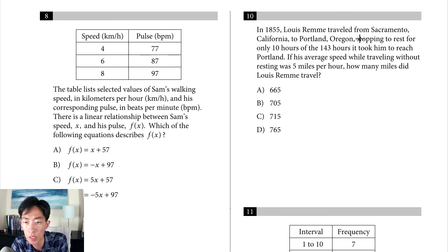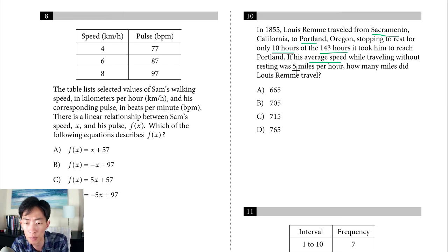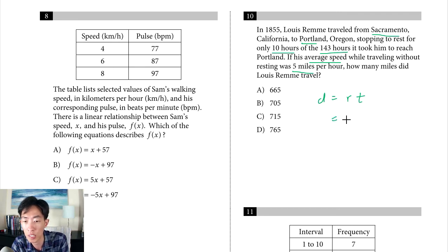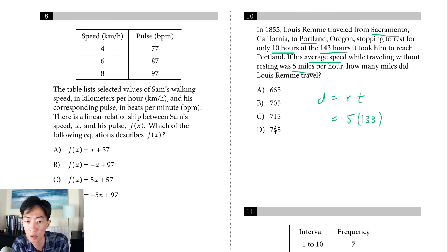Question 10: Louis Remy traveled from Sacramento to Portland in 143 total hours, resting for 10 hours. His average traveling speed was 5 miles per hour. Using distance equals rate times time: the actual travel time was 143 minus 10, which is 133 hours. So 5 times 133 equals 665 miles, which is choice A.